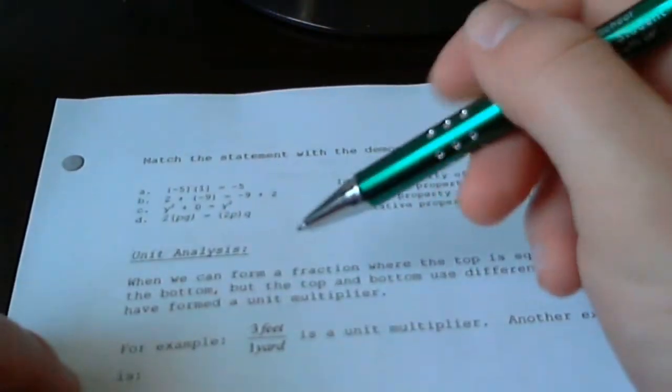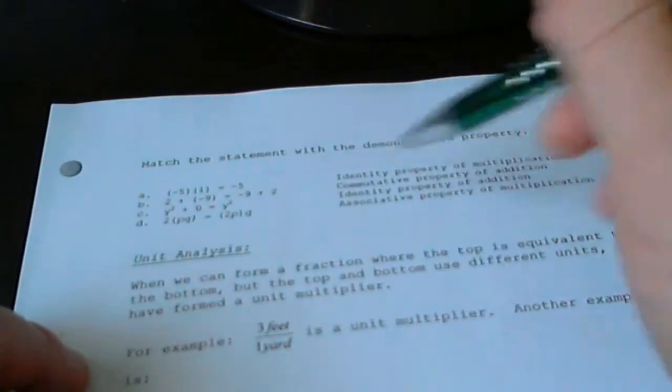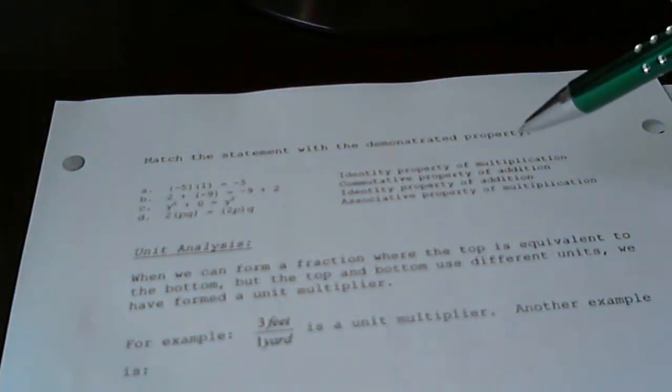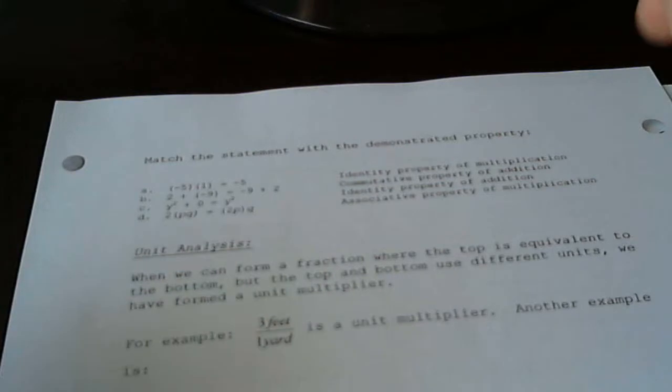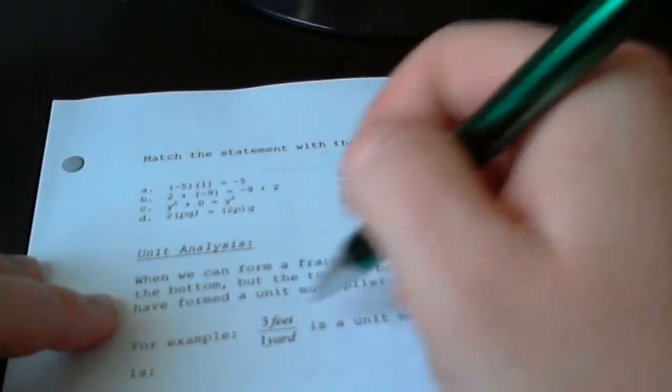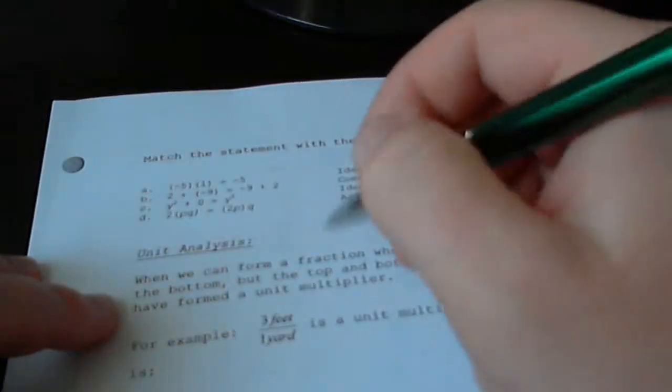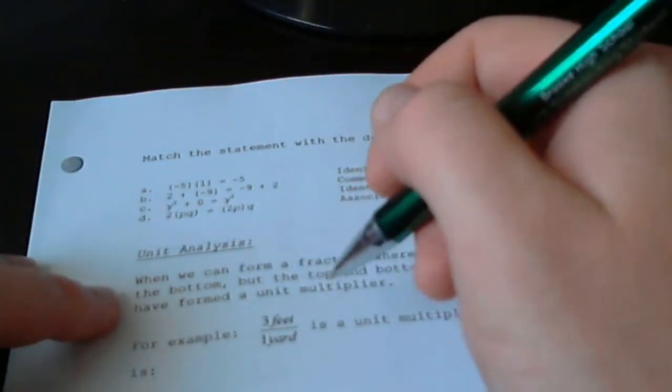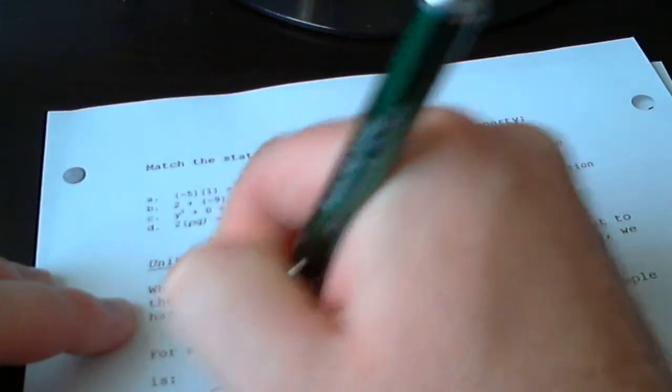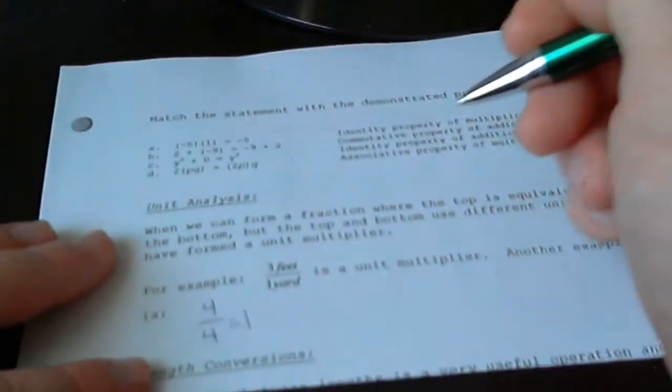The last topic we're going to discuss in this section is called unit analysis. And what we need to discuss unit analysis are these handy little helpers called unit multipliers. Unit multipliers have a value of 1. Remember, whenever you take a number and put it over top of itself and divide, you get 1.